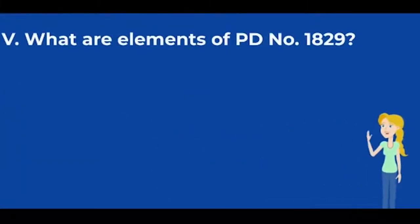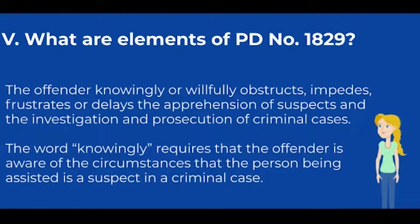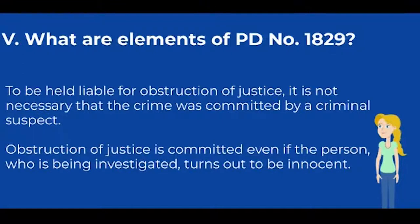What are the elements of PD No. 1829? The offender knowingly or willfully obstructs, impedes, frustrates, or delays the apprehension of suspects and the investigation and prosecution of criminal cases. The word 'knowingly' requires that the offender is aware that the person being assisted is a suspect in a criminal case. Obstruction of justice is committed even if the person who is being investigated turns out to be innocent.